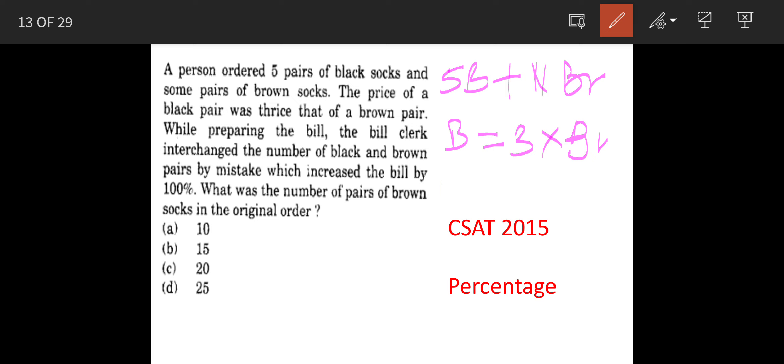While billing, the bill clerk interchanged the quantity, making it 5 pairs of brown socks plus n pairs of black socks. As a result, the bill amount was double. The question is: what was the number of pairs of brown socks in the original order?